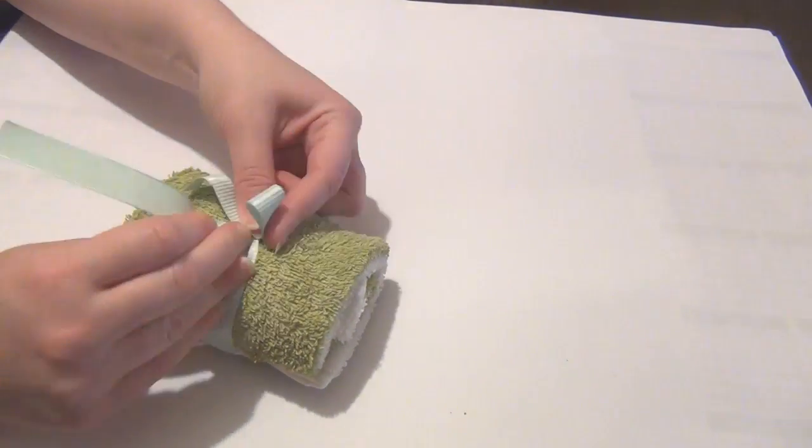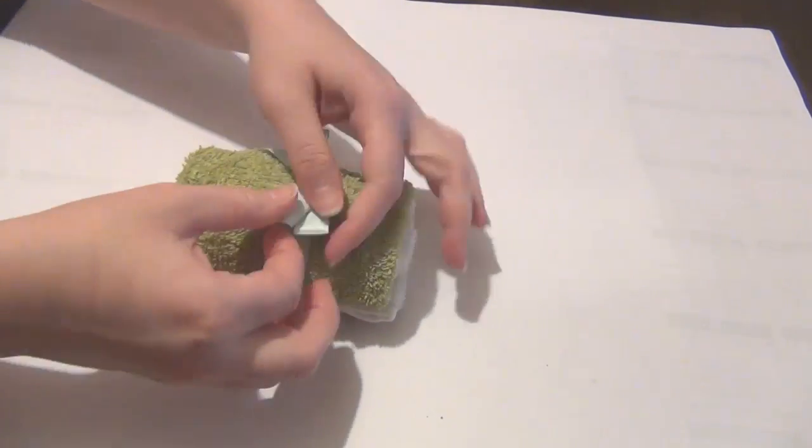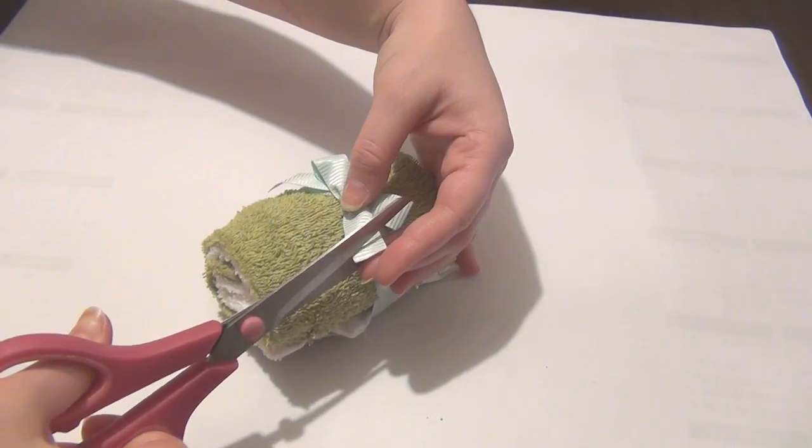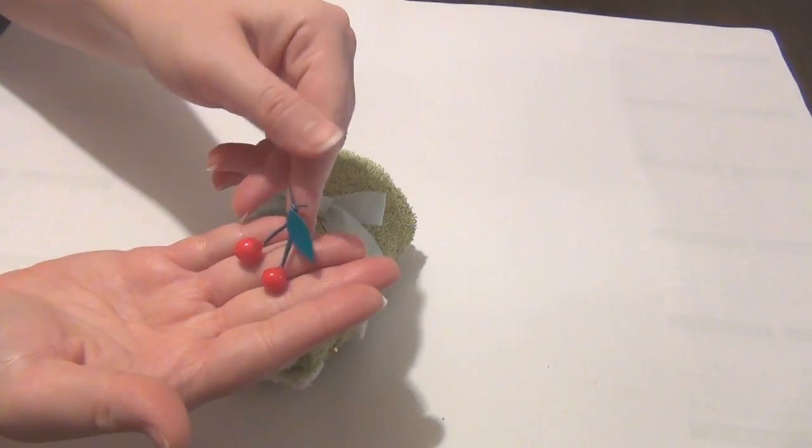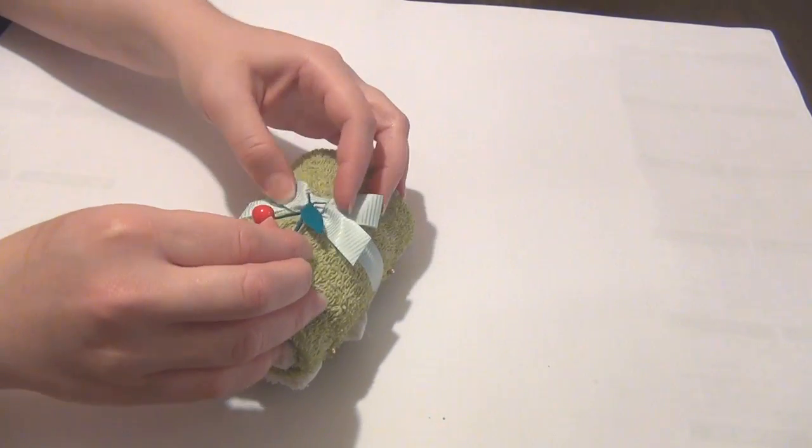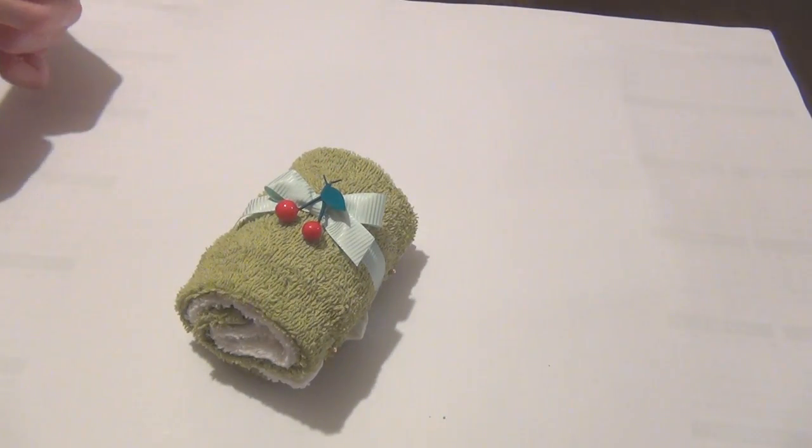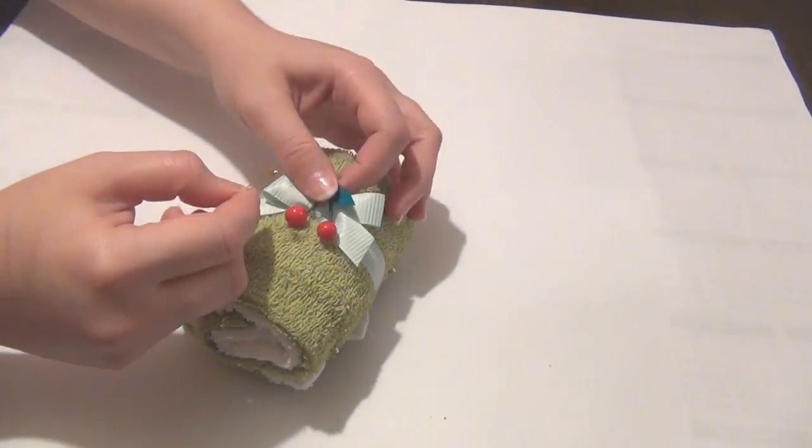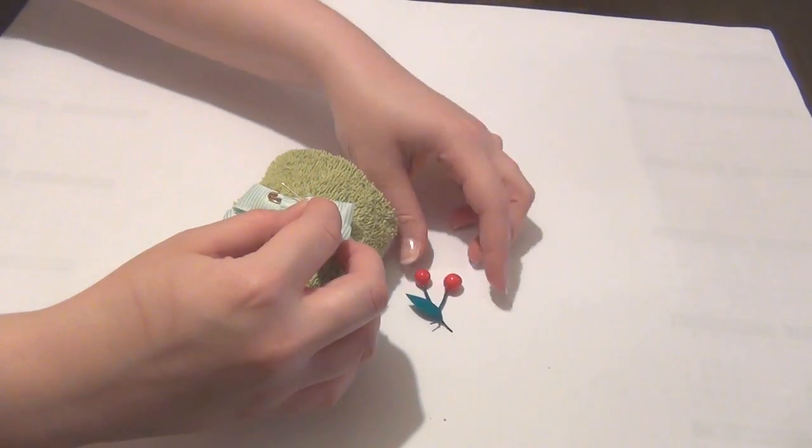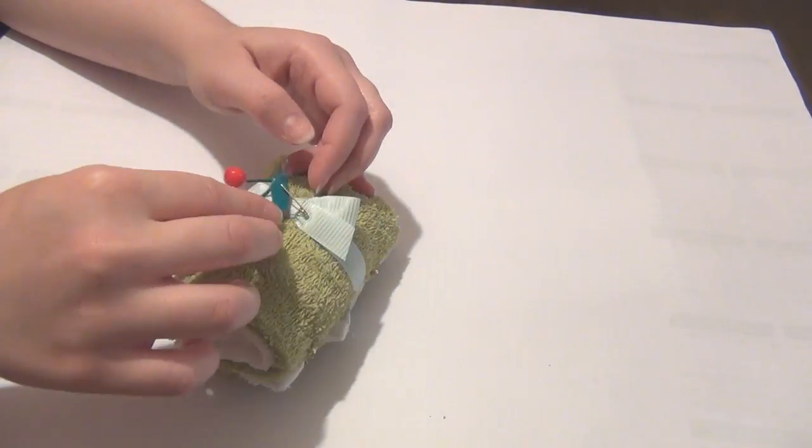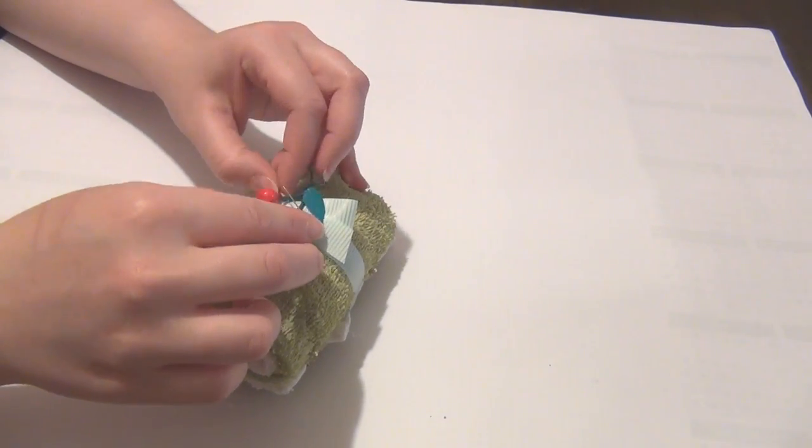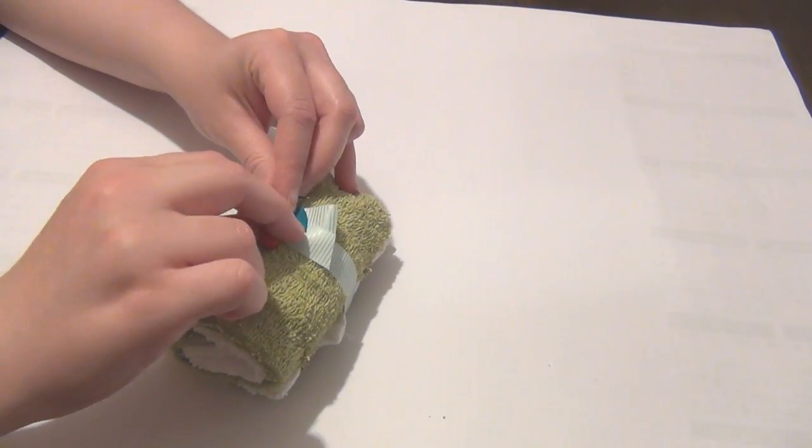Next take your ribbon, wrap it around the cake and tie it into a bow. Just for an added embellishment on this cake I'm going to go ahead and pin one of these cherries onto the ribbon. So I just used one of my safety pins, I passed that through the bow and then I just pinned the cherry in place and isn't that just adorable.